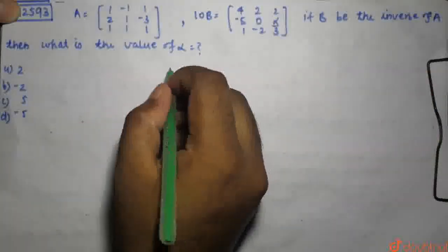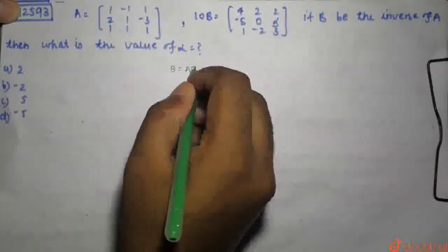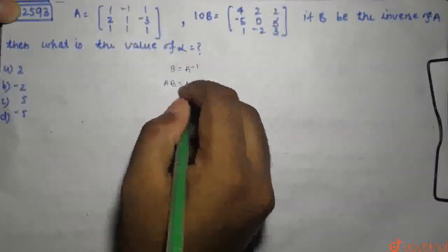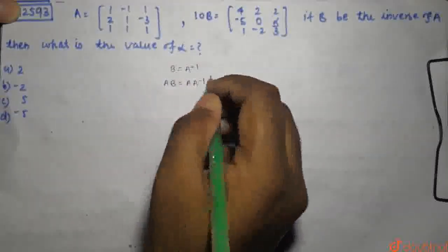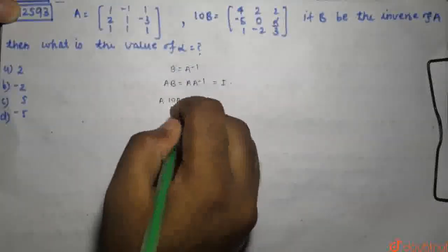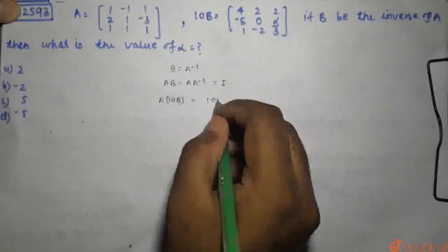It is said that B is the inverse of A. The proper approach is A times 10B equals identity matrix.